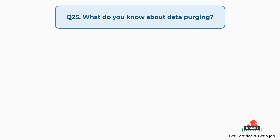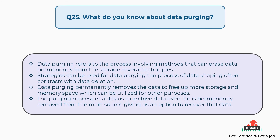Question number twenty-five: What do you know about data purging? Data purging refers to the process involving methods that can erase data permanently from storage using several techniques and strategies. The process of data purging often contrasts with data deletion; however, data purging permanently removes the data to free up more storage and memory space. Further, the purging process enables us to archive data even if it is permanently removed from the main source, giving us an option to recover that data.